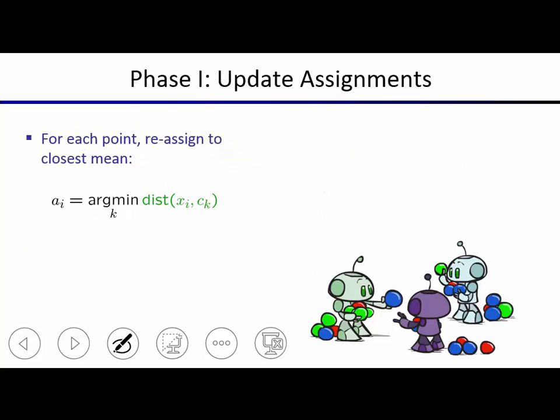Each iteration in k-means reduces this objective function. There are two stages: updating the assignments (keeping means fixed, changing cluster membership for each data point), and updating the means (fixing assignments, changing the means). The assignment we pick for each point is the cluster center that minimizes the distance to x_i. Both steps individually reduce the objective, so together they guarantee the objective decreases in every iteration.